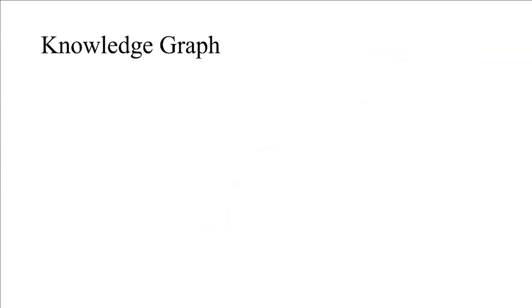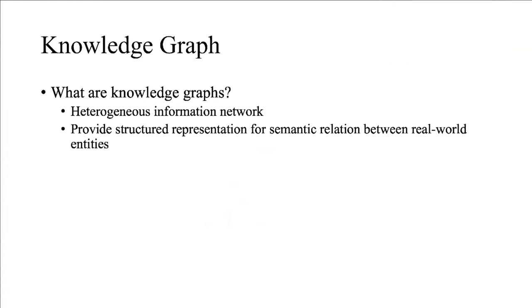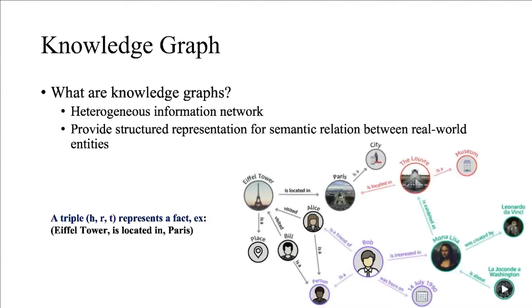Let's start with knowledge graphs. A knowledge graph is a heterogeneous information network that provides structured representation for semantic relations between real-world entities. For example, a triple HRT represents a fact: FL Tau is a head entity, 'is located in' is the relation, and Aries is the tail entity.